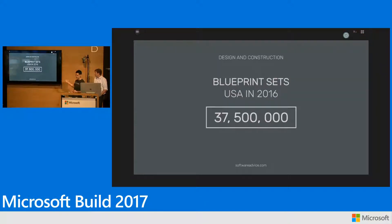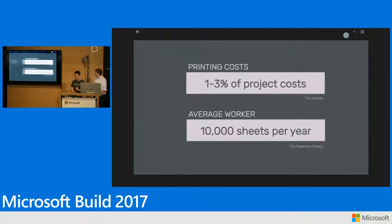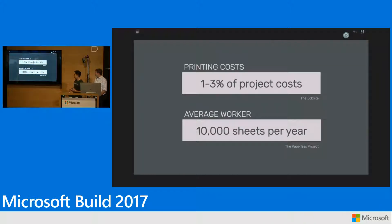The scale of the problem: in the US alone last year, 37.5 million blueprint sets — and that's only one type of drawing — were printed off. Projects can cost a lot of money. One to three percent in printing costs is significant, and a lot of time is spent by the average worker at a printer or scanner.